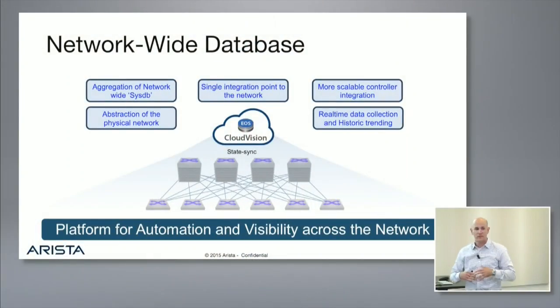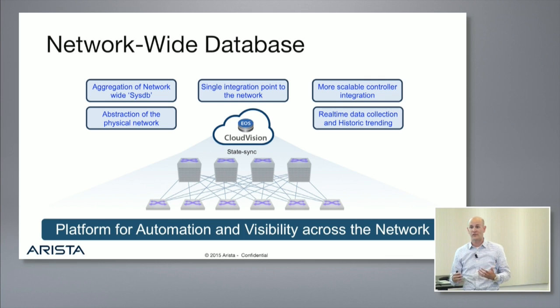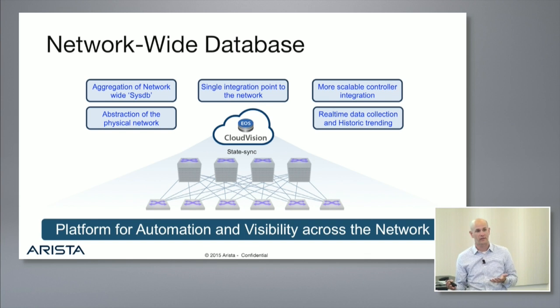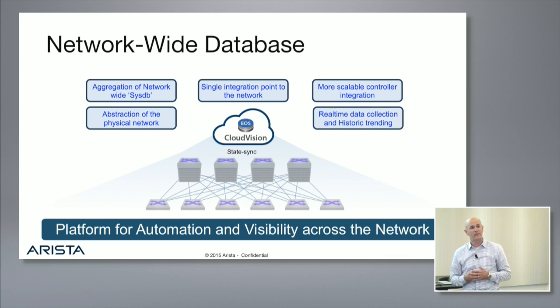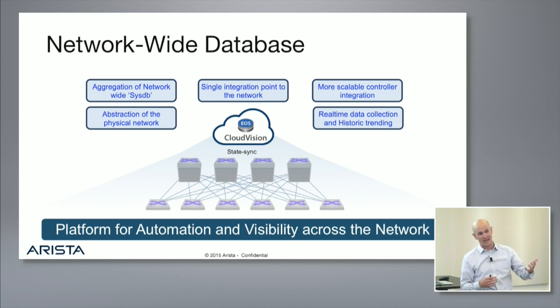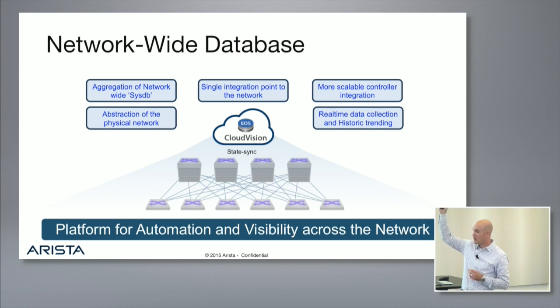If we take a typical network infrastructure — your spine-leaf — you have the concept of the SysDB state database resident on each of the Arista switches. With Cloud Vision, we abstract this SysDB up to a network-wide level. Cloud Vision is EOS — it's the same SysDB architecture — but it's not running on a switch; it's running on a virtual machine, effectively centrally, where we synchronize state up to that common point. From that common point we can view into the network state at one particular point in time. By abstracting away the physical network, nuances like MLAG versus ECMP, this chipset versus that chipset, this software version versus that — they don't go away, but they go away relative to what we provide northbound.